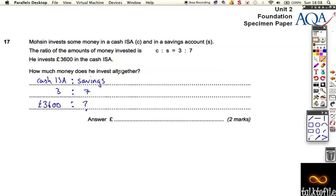We want to work that out and then add them together. It's important that we're not splitting the £3600 by all 10 parts - we're only splitting it by the 3 parts it belongs to. So 3 parts equals £3600.